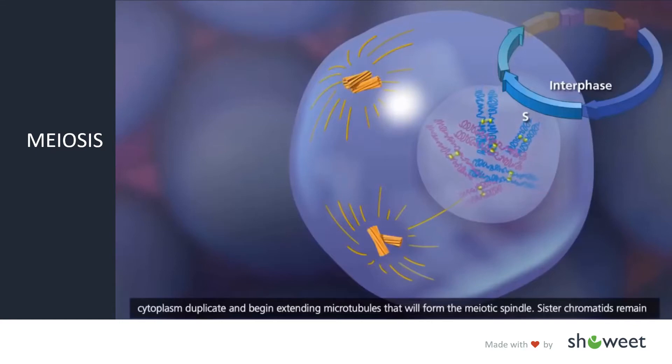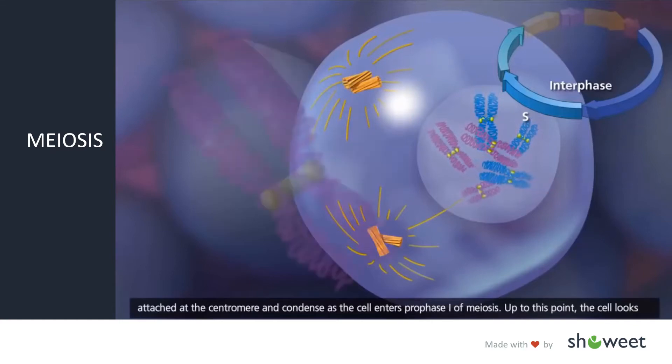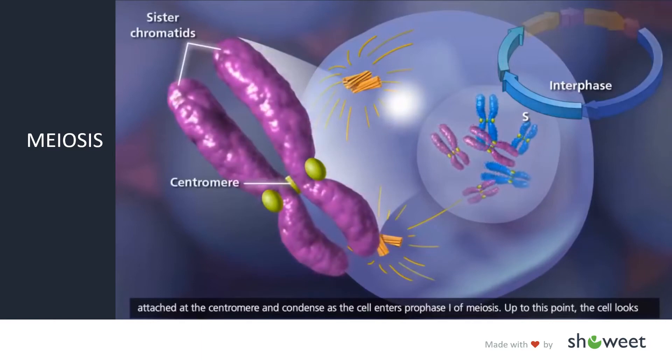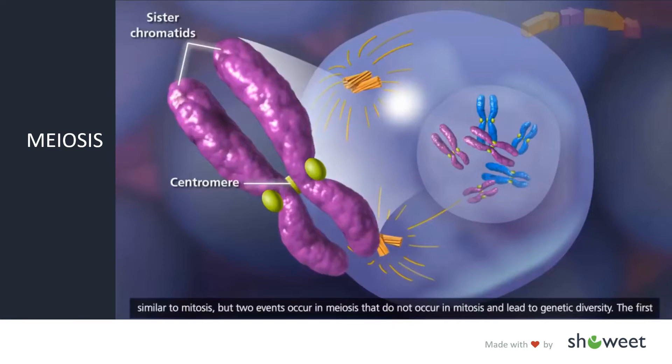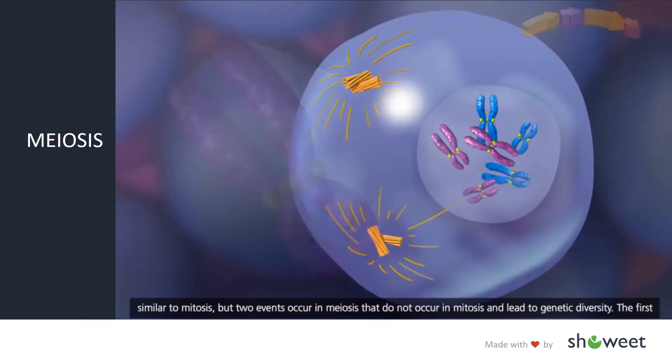Sister chromatids remain attached at the centromere and condense as the cell enters prophase I of meiosis. Up to this point, the cell looks similar to mitosis, but two events occur in meiosis that do not occur in mitosis and lead to genetic diversity.